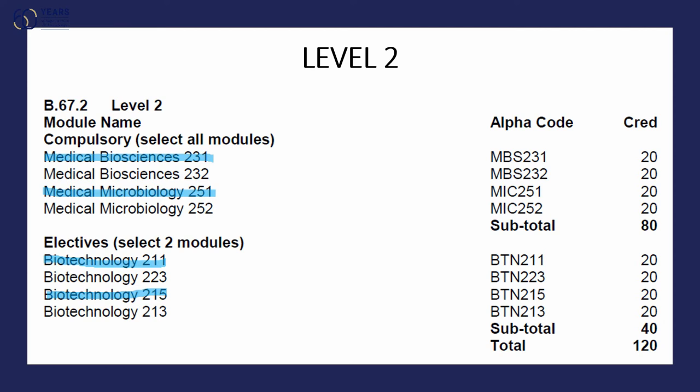The content will be displayed there to guide students in making decisions. For second semester, the student will register for MBS core module 232 as well as Medical Microbiology module 252. They will also have to select from either Biotech 223 or Biotech BTN 213 to complete the three modules per semester. What factors determine which one they select will depend on the preference of the student based on the content of the module, as shown in the next slide.